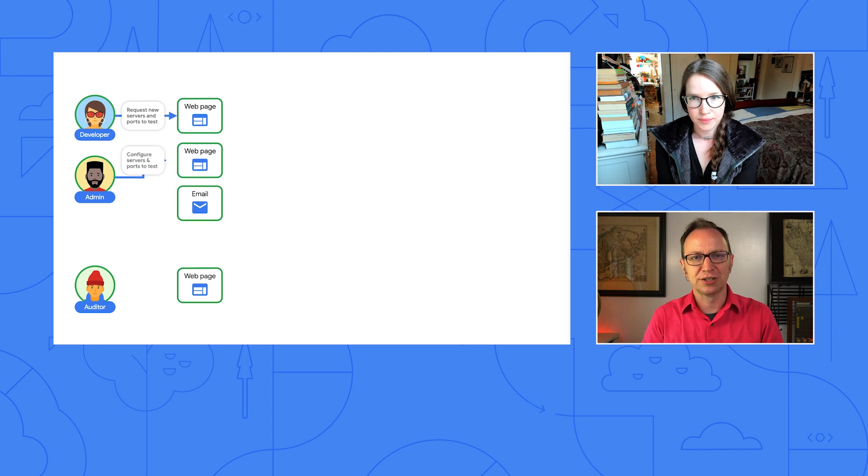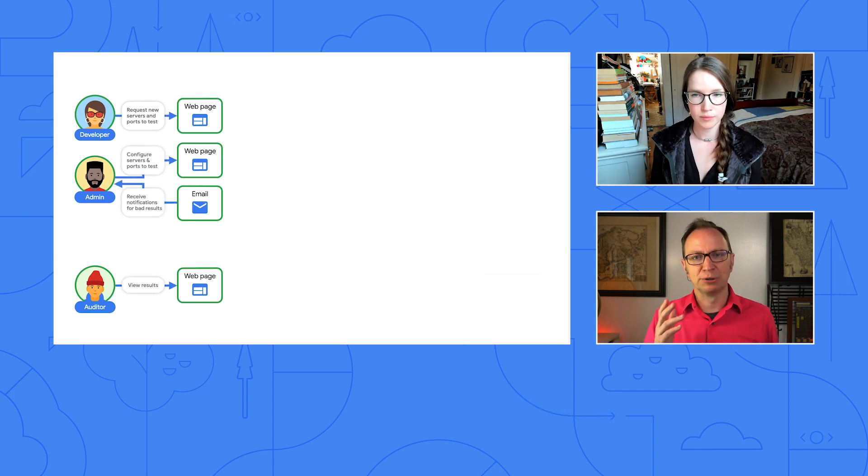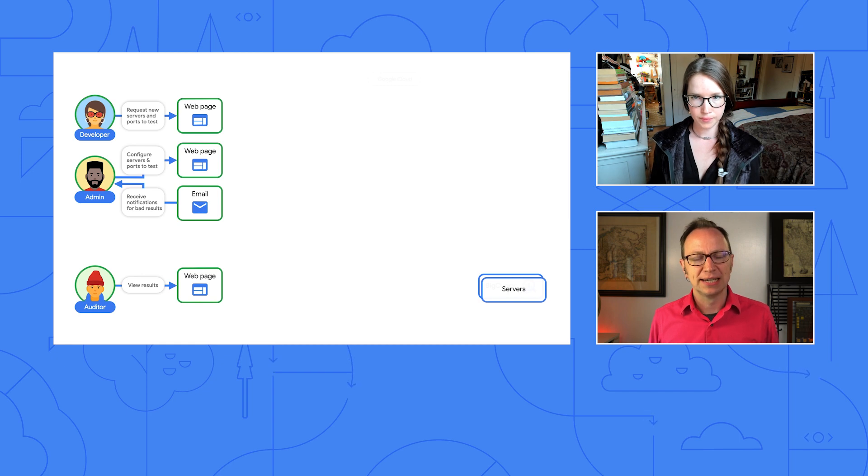So we have our system diagram started, and down in the lower right-hand corner we put the servers that they're monitoring. This is a company internal app, is that right? Yeah, it's completely internal. So these are employees — they should be able to reach it, but no other external users should be able to reach this application.